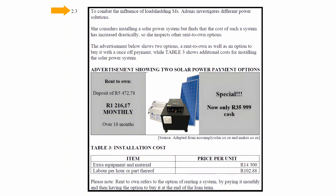Question 2.3 states that to combat the influence of load shedding, Ms. Adonis investigates different power solutions. She considers installing a solar power system but finds that the cost has increased drastically, so she inspects other rent-to-own options. The advertisement below shows two options: a rent-to-own option and an option to buy with a once-off payment, while Table 3 shows additional costs for installing the solar power system.